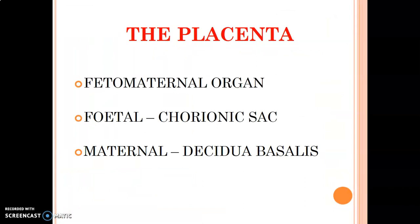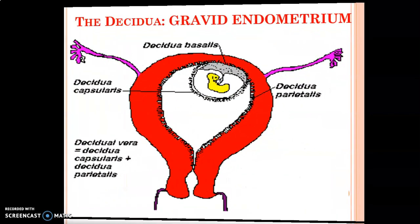The placenta is a fetal-maternal organ — it has a fetal part and a maternal part. The fetal part is the chorionic sac, and the maternal part is formed by the decidua basalis, which is part of the endometrium at the embryonic pole. Epiblast and hypoblast cells form an extraembryonic mesoderm, which develops spaces that coalesce to form the chorionic cavity.